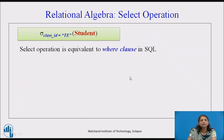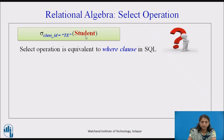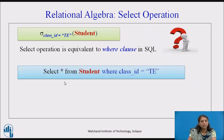The equivalence of this select operation in SQL is the WHERE clause. So the select operation is equivalent to the WHERE clause in SQL — whatever predicate we give here is a WHERE clause, and the relation name maps to the FROM clause. The equivalent SQL statement is: SELECT * FROM student WHERE class_id = T.